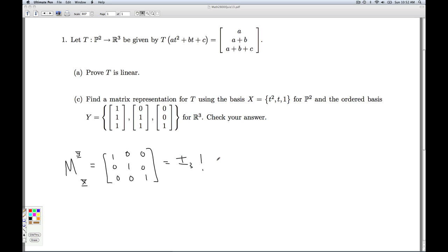So we better check this out. Alright, so how do we check that this is doing what it's supposed to do? I just take this matrix and multiply it by a generic vector in P2 expressed in x-coordinates. Once again, that's A, B, C.